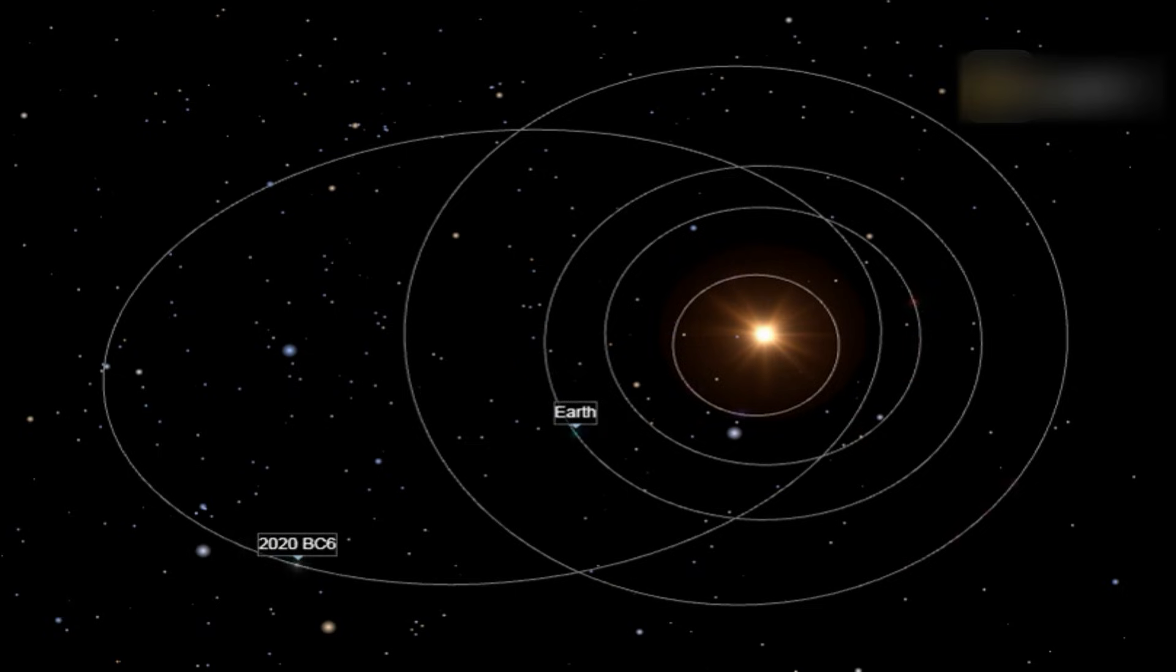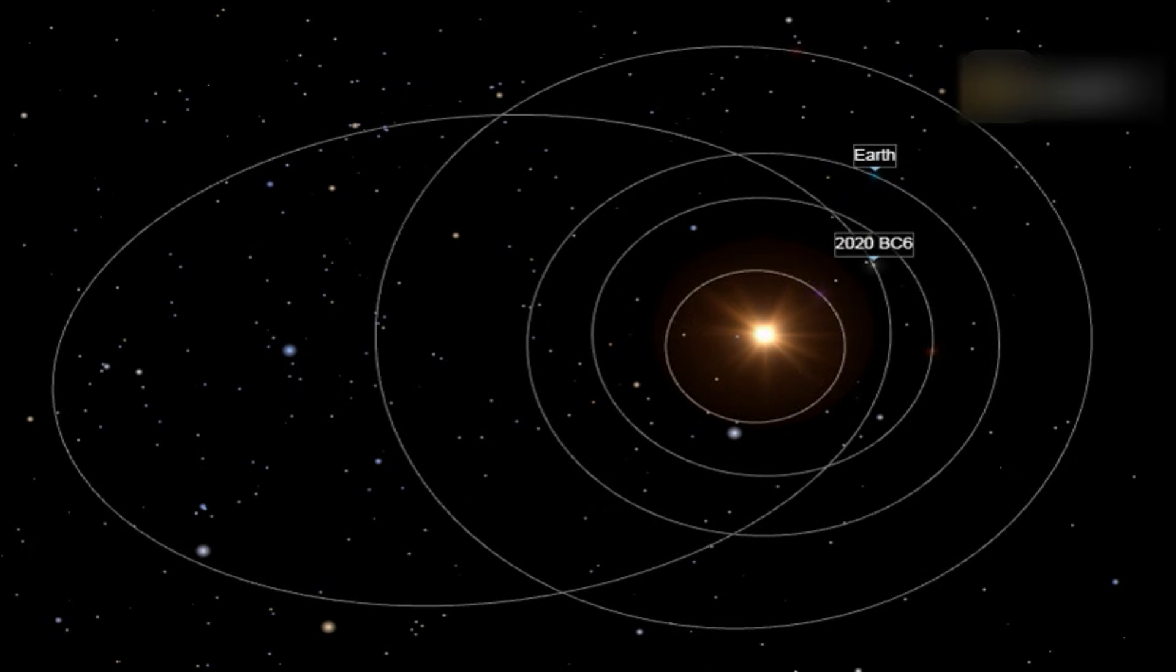2020 BC 6 orbits the Sun every 927 days, about 2.5 years, approaching it to within 0.54 astronomical units and receding from it by up to 3.18 astronomical units. Its orbit is highly elliptical, based on its brightness and the way it reflects light.